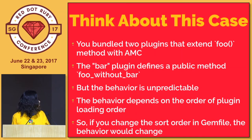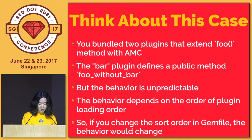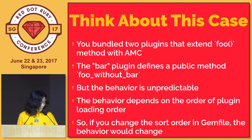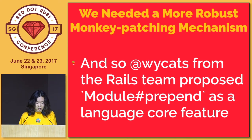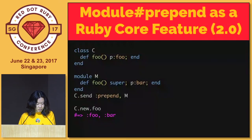In a real world example, think of this case: you have two Rails plugins that extend one same method listed in a Gemfile. When you change the order of these gems in the Gemfile, your code may break in some cases. So we needed a more robust monkey patching tool. Yehuda Katz proposed module prepend as a Ruby language core feature in Ruby 2.0.